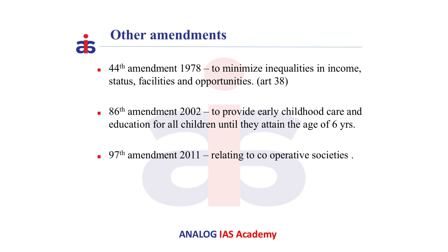Now let us see some other amendments. The 44th Amendment Act of 1978 added one more directive principle which requires the state to minimize inequalities in income, status, facilities, and opportunities — that is Article 38. The 86th Amendment Act of 2002 changed the subject matter of Article 45 and made elementary education a fundamental right under Article 21A.